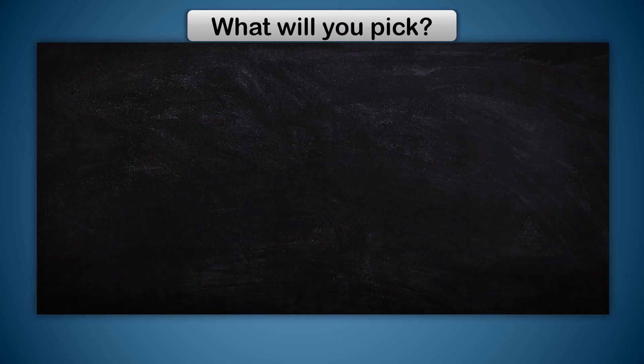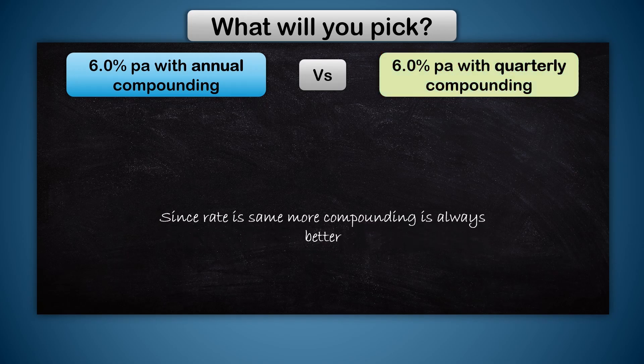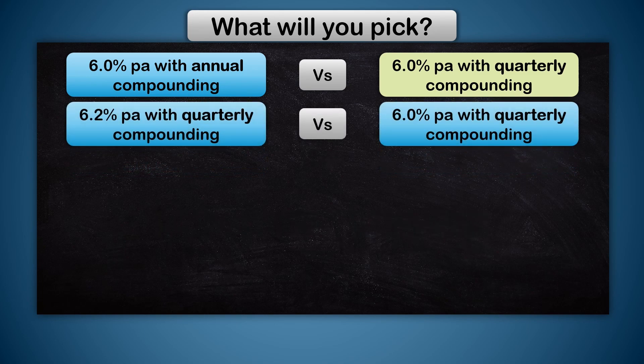But let's say you get a choice: either 6% compounded annually or 6% compounded quarterly. What will you pick? Straight away, you can pick quarterly compounding. As we discussed earlier, growth will definitely be more when compounding happens more number of times. What if you have a choice between 6.2% compounded quarterly and 6% compounded quarterly? Here, the compounding frequency is the same in both cases, so you can straight away pick the one with the higher interest rate.